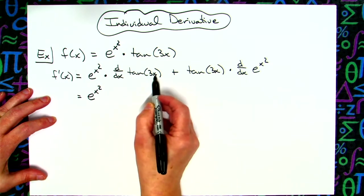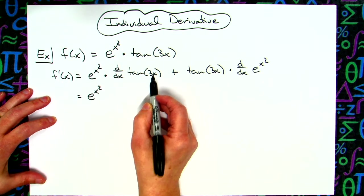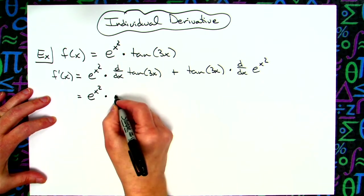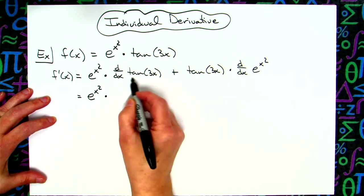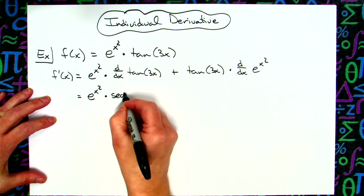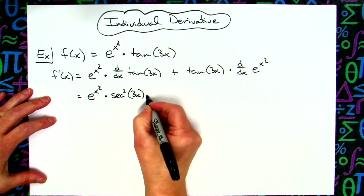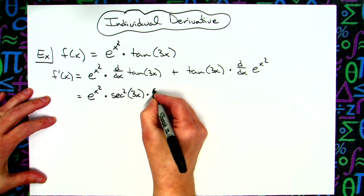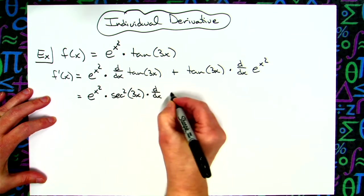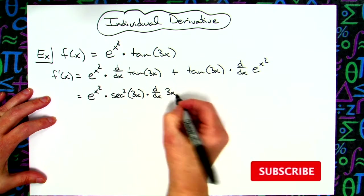It is going to have a chain, so we'll go ahead and do that d dx notation in this as well. So we will take the derivative of the outside function, secant squared, leave the inside part alone, and then include the chain. So take the derivative of that inside part.